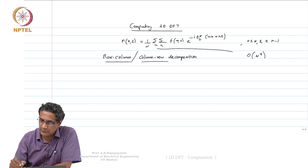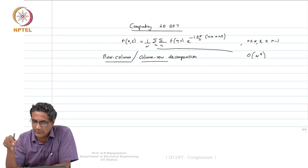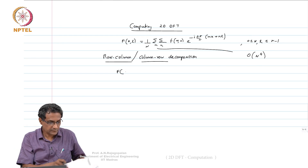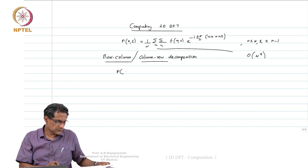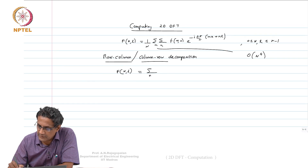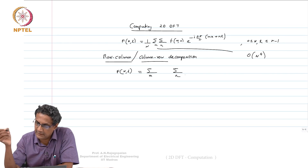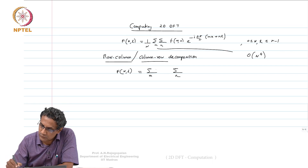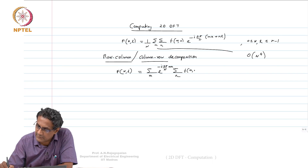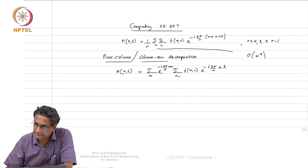Suppose I ignore the 1/N factor for now — you should always remember that if it is unitary then that 1/N should be there. Now, suppose we look at F of KL and split the sum, bringing in terms that involve only M outside. Then we have e to the power minus j 2 pi over N times MK outside, and inside I get F of MN times e raised to minus j 2 pi over N times N times L.